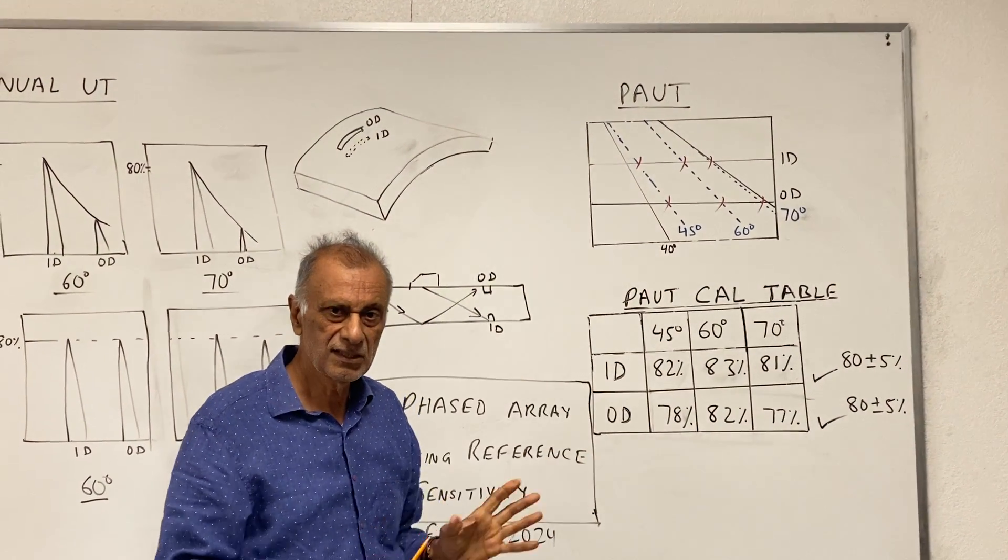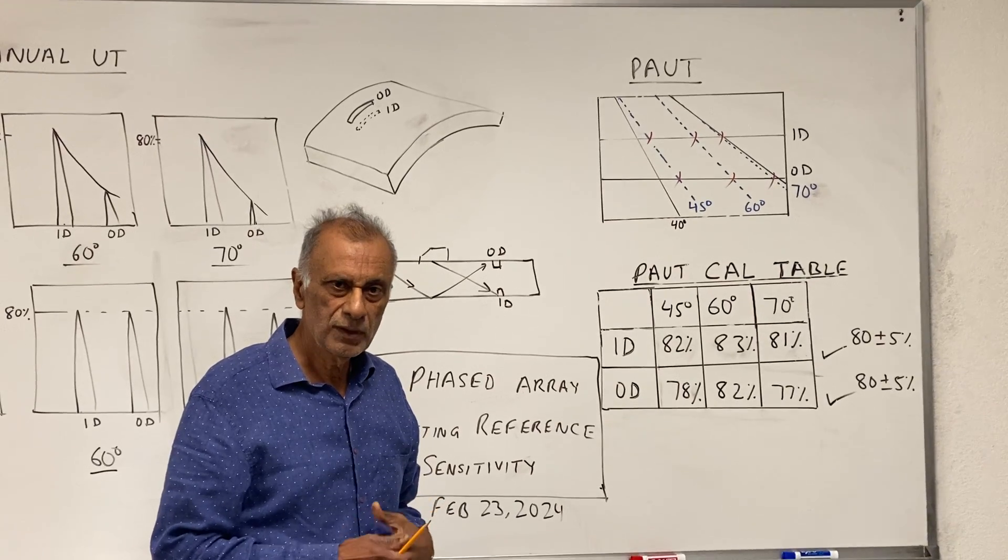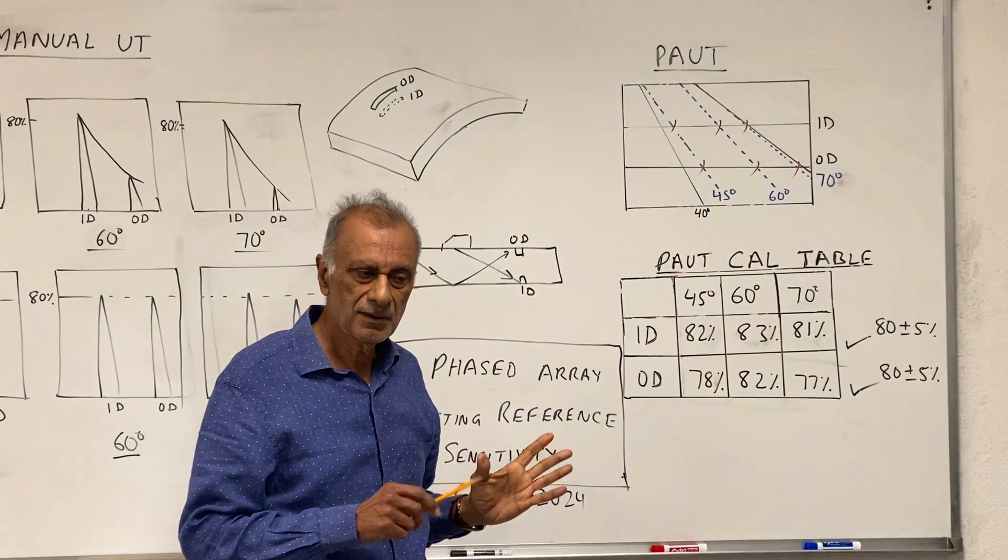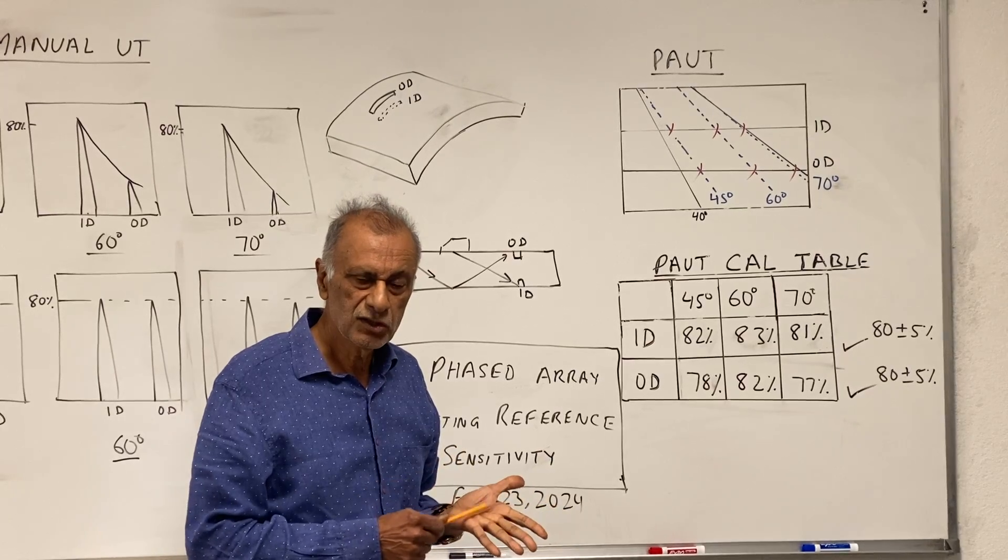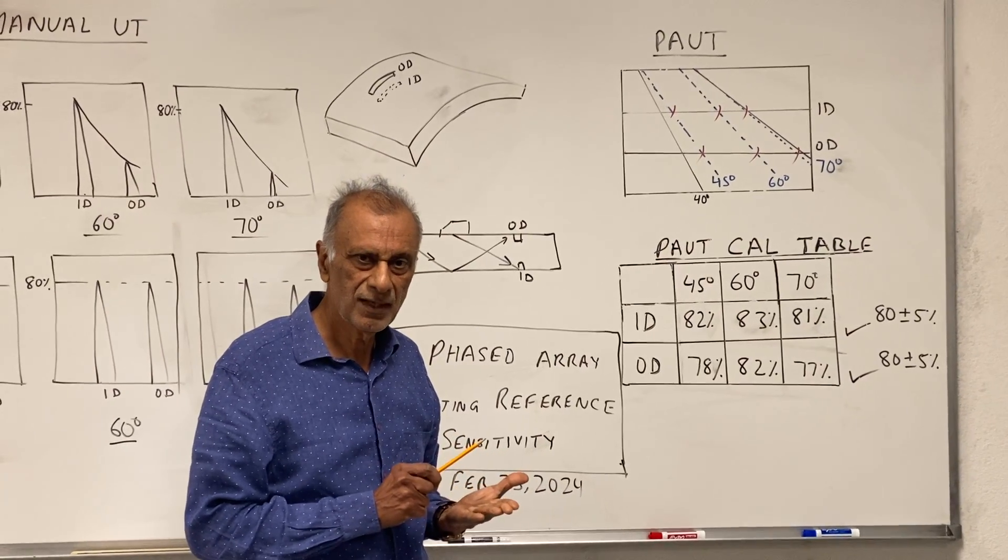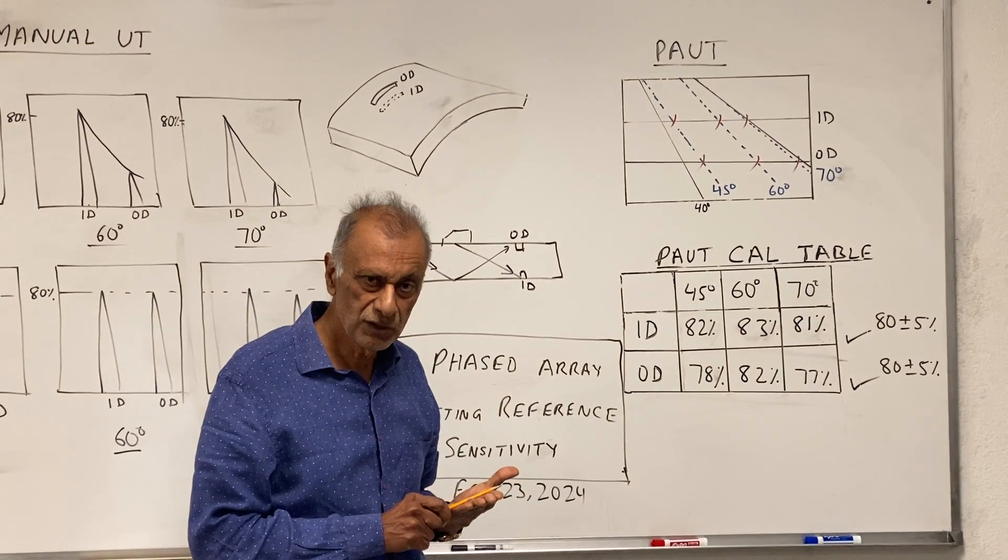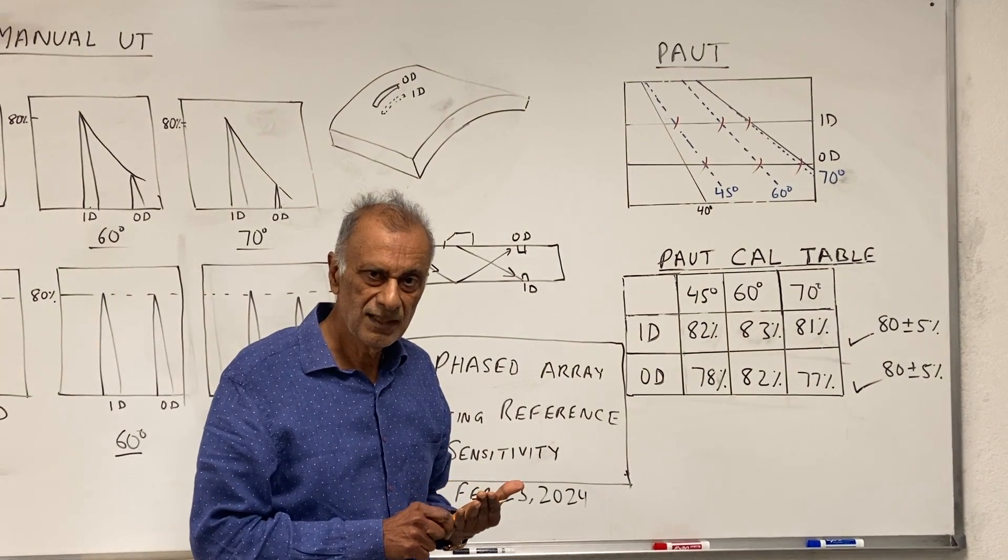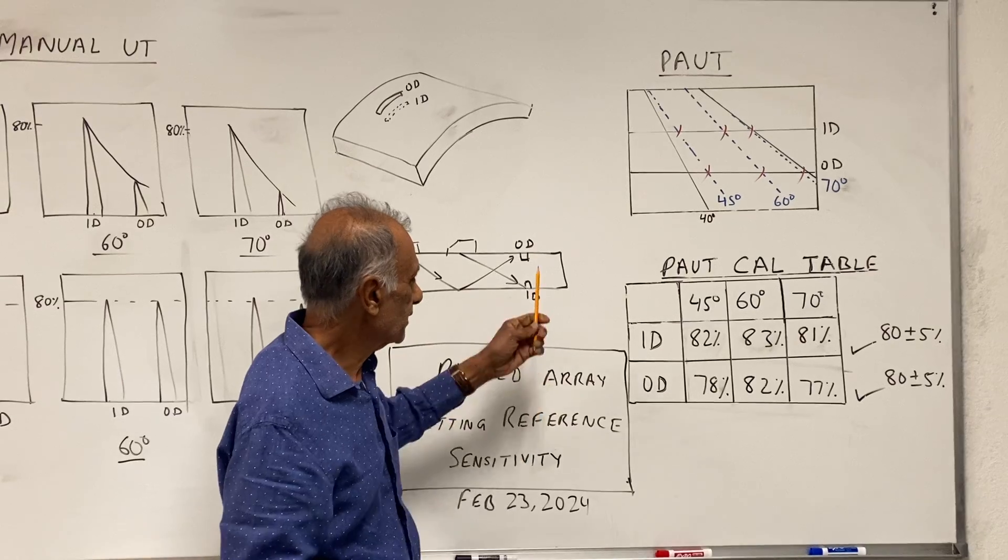Basically, this TCG for the PAUT is created at the same time for the ID notch and the OD notch. The goal is that at the end of the calibration for the phased array inspection, we should get these...